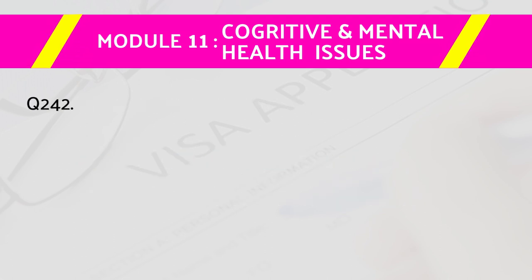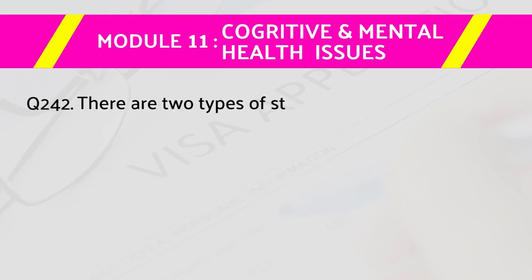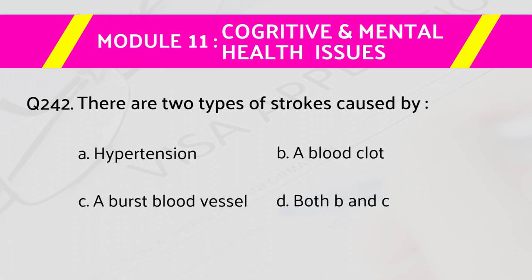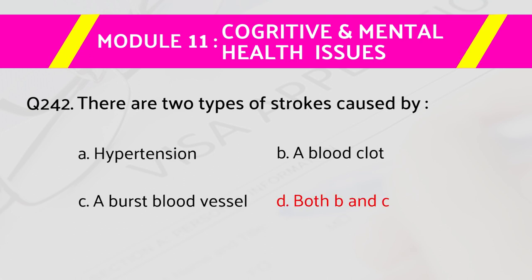Question number 242: There are two types of strokes caused by — answers are: a) hypertension, b) a blood clot, c) a burst blood vessel, d) both b and c. The right answer is d) both b and c — a blood clot and a burst blood vessel.